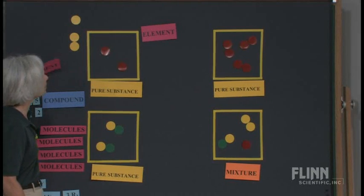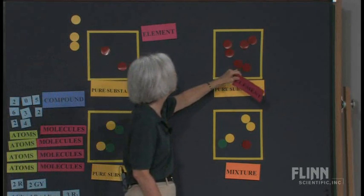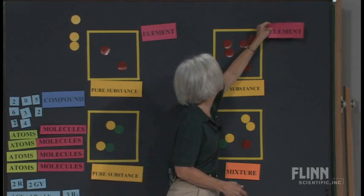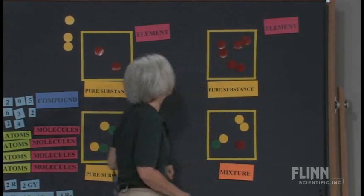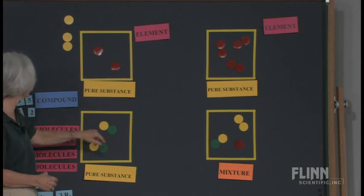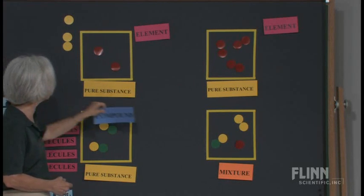And again, this might be a little bit tricky because we have things connected together, but they're all red. They're all the same type of atom. So that also is an element. And down here, since we have two different types of atoms, that obviously would be a compound.